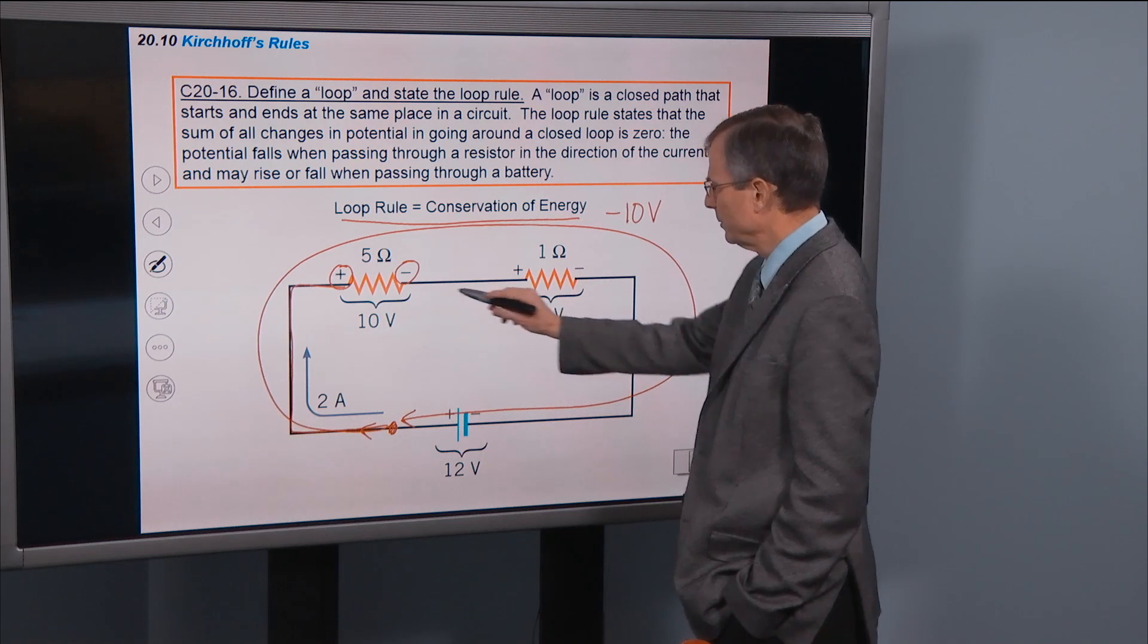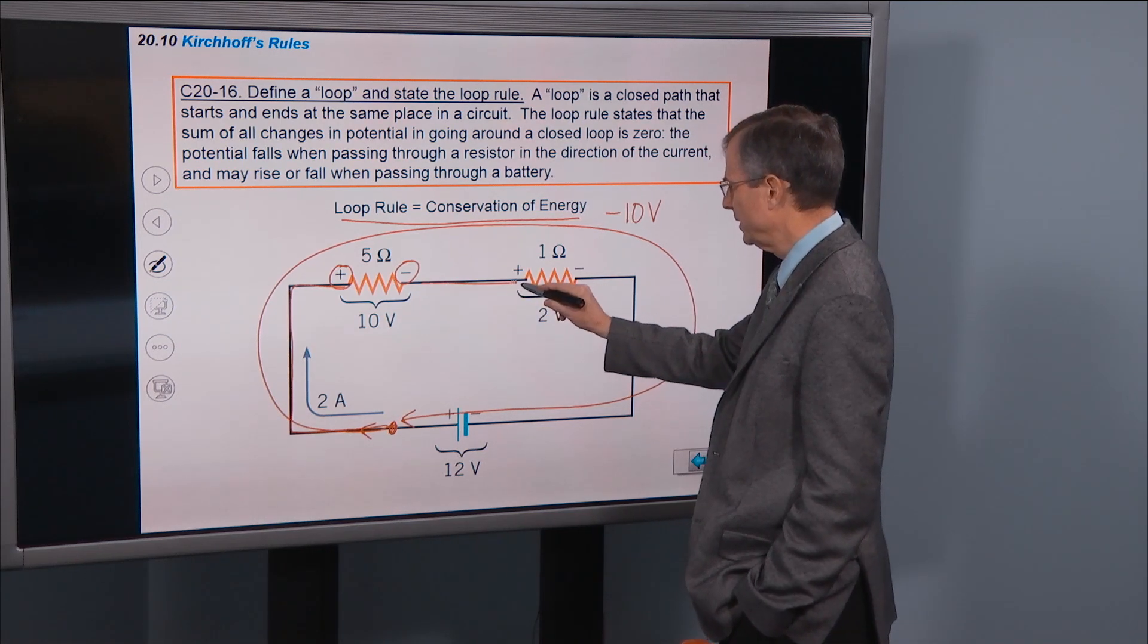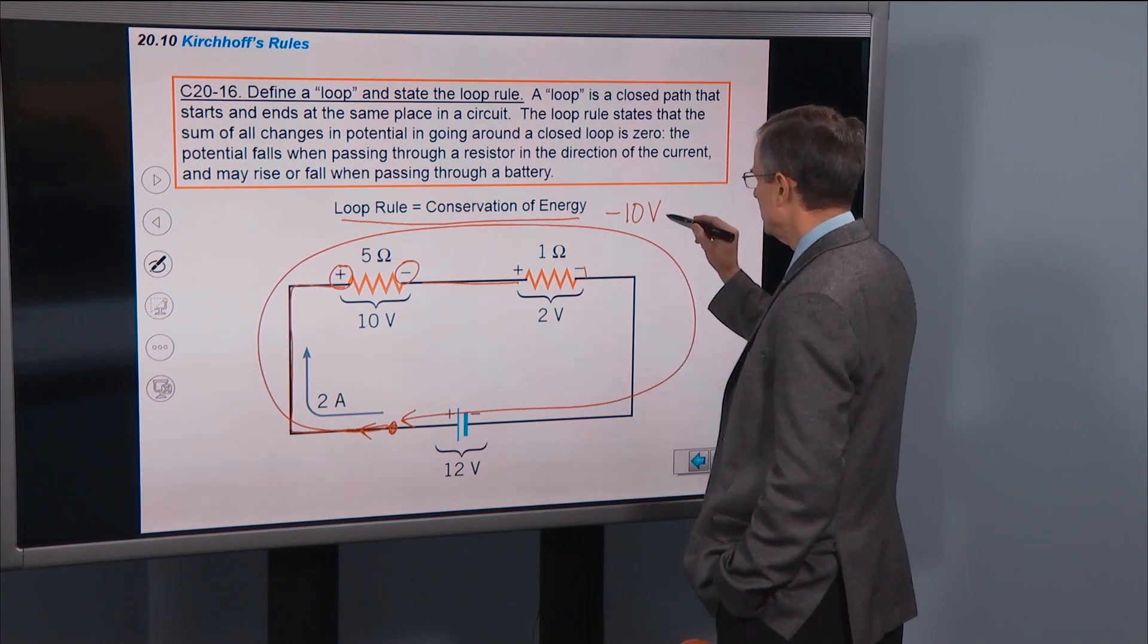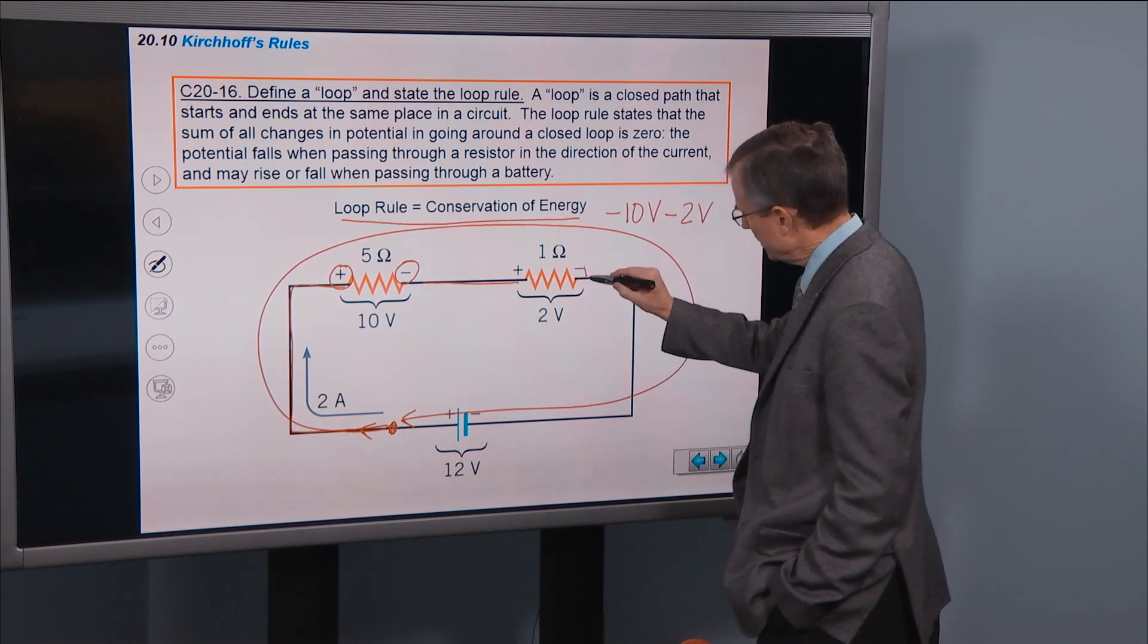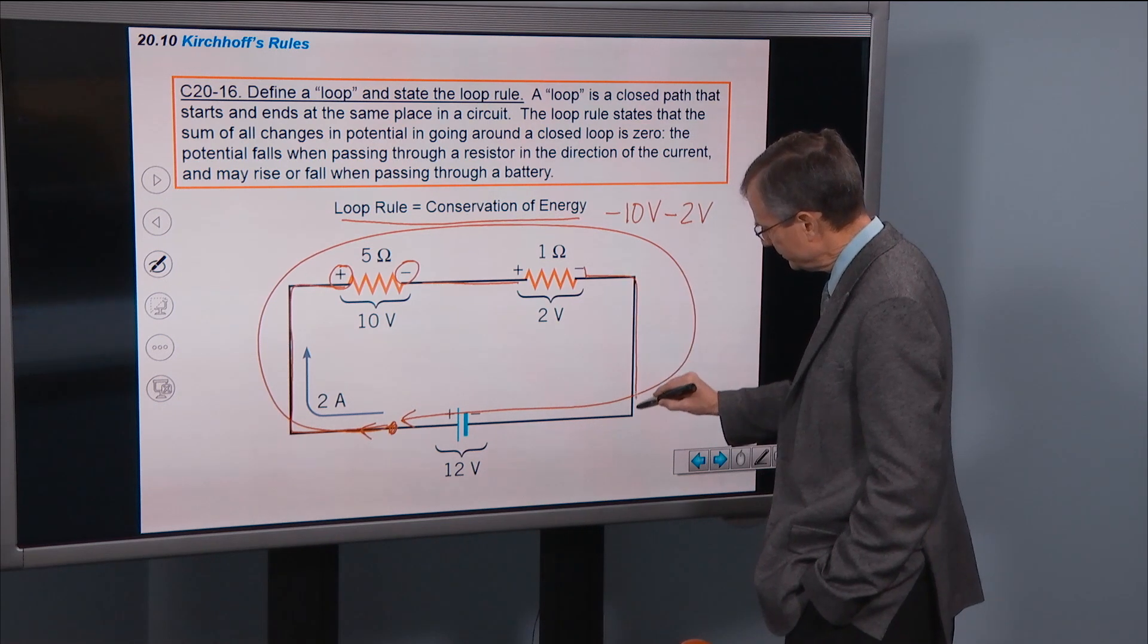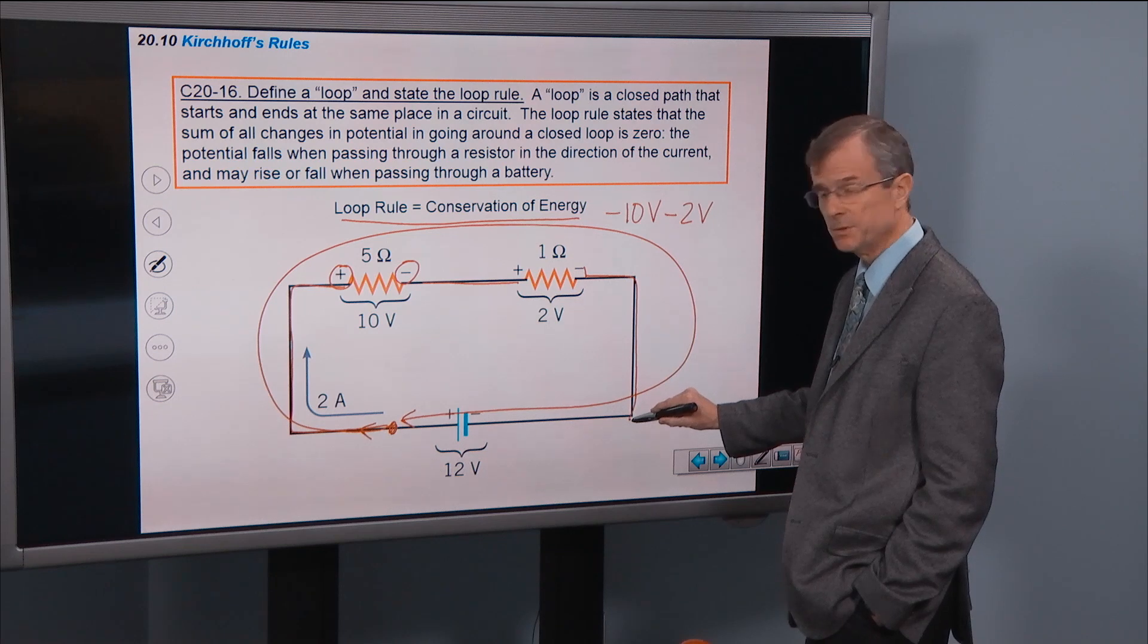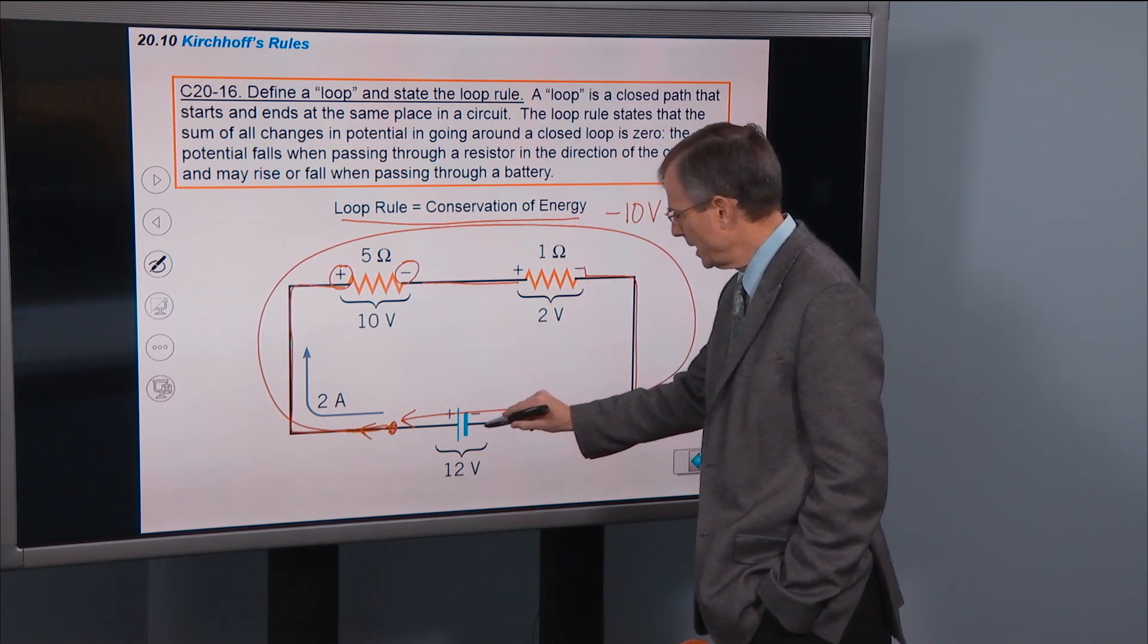So there's my change in potential in dropping off that waterfall. Then I come over here, the potential doesn't change all the way along here, but does change as I cross this resistor, and it's going to change by 2 volts, and it's going to go down. And then I'm continuing along this path, potential is not changing now, the electric potential, or the voltage.